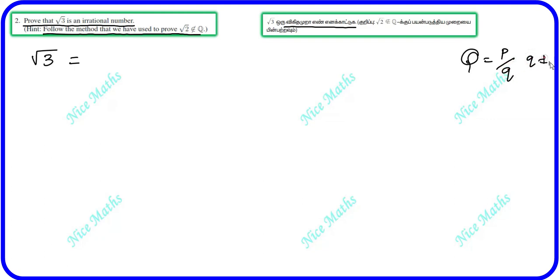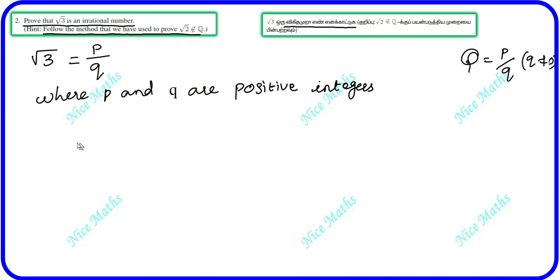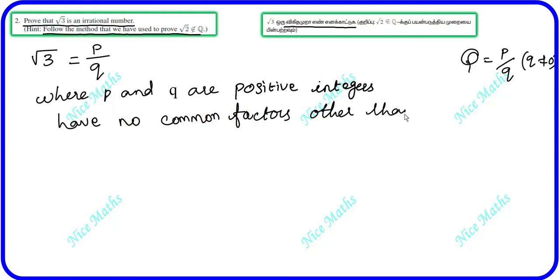We say root 3 equals p by q, where q is not equal to 0. Here, p and q are positive integers — that is, positive whole numbers — and they have no common factor other than 1.